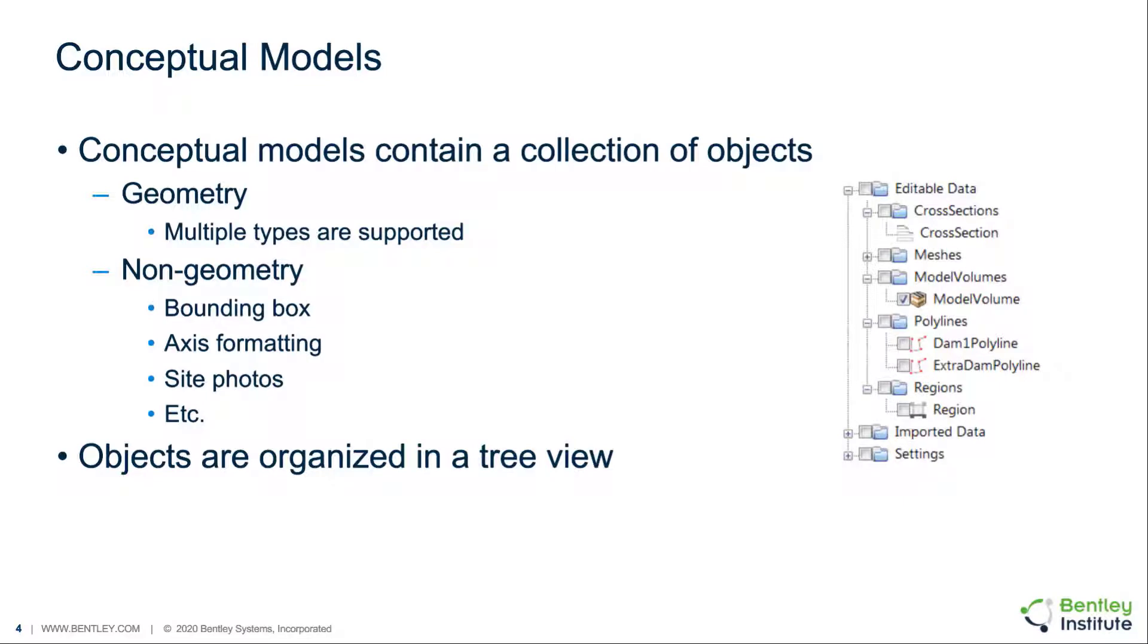Conceptual models contain a collection of geometry and non-geometry objects that are organized in a tree view control. Example geometry objects are regions, polylines, meshes, and model volumes. Examples of non-geometry objects are bounding boxes, axis formatting, or site photos that are used as background reference in building geometry.